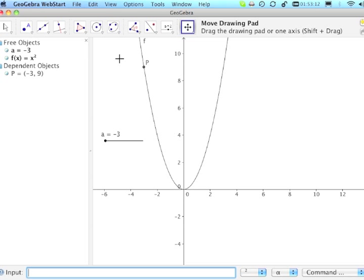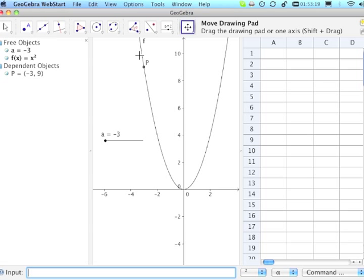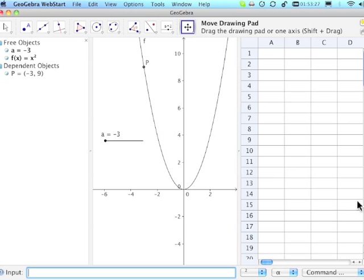I'm now going to open the spreadsheet window by going view, spreadsheet view. And I want to make sure I have at least four columns visible. If not, you can drag this a bit over to get that fourth column visible.